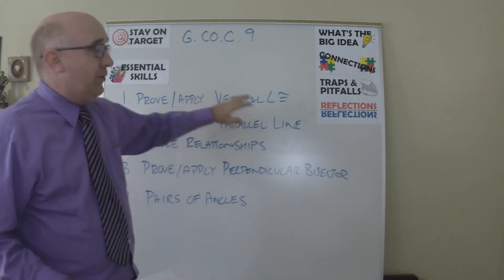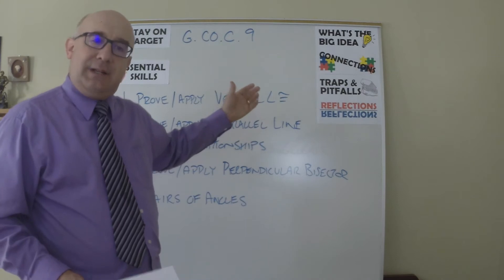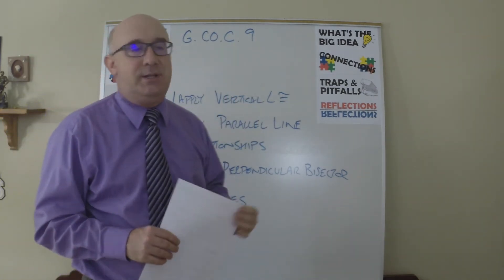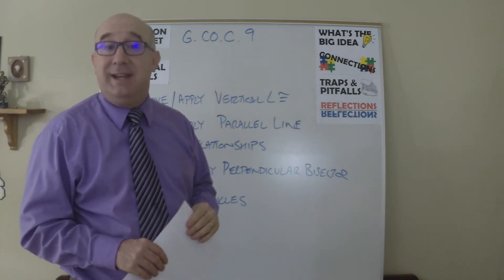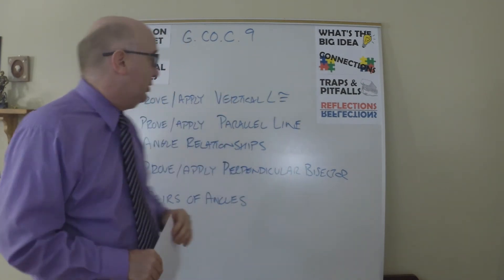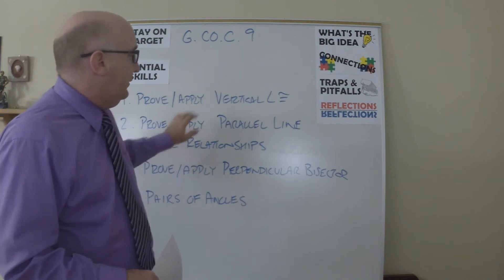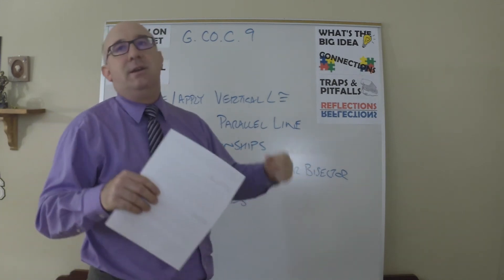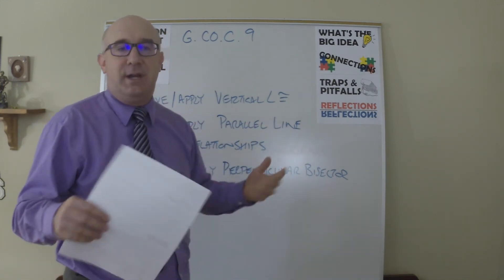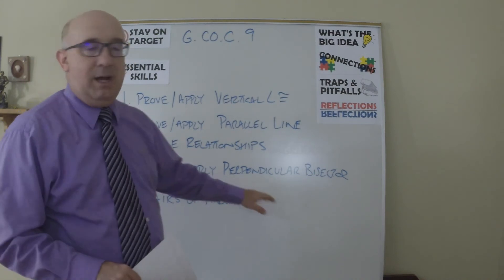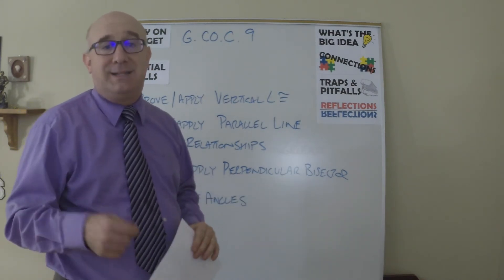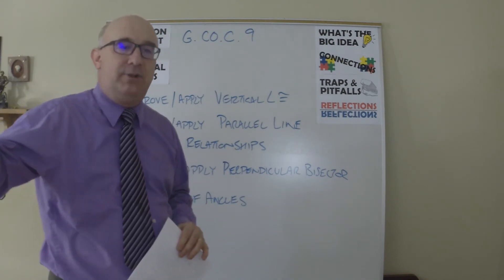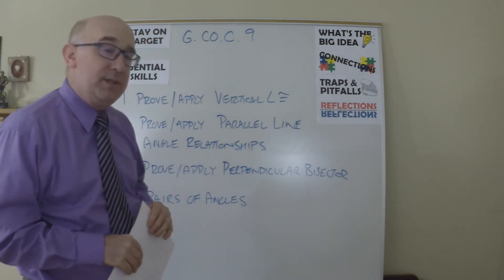So vertical angles are equal — we have a kind of a classic proof there. On another video set, I will provide you with some thoughts about ways to prove that in a more transformational approach. Again, proving and applying the parallel line relationships of angles: alternate interior, alternate exterior, same side interior, and so on. Also, prove and apply the perpendicular bisector theorem, where any point on the perpendicular bisector is equidistant to the two endpoints of the segment.